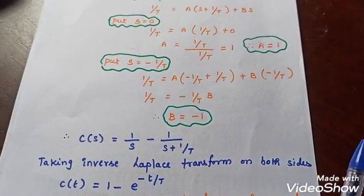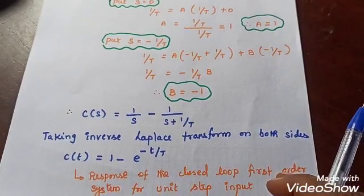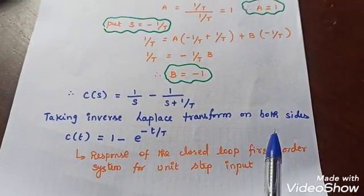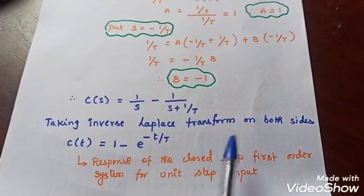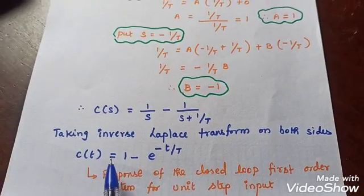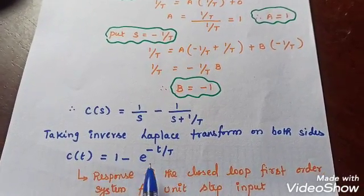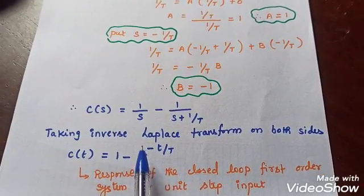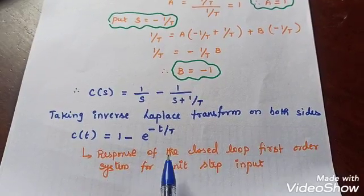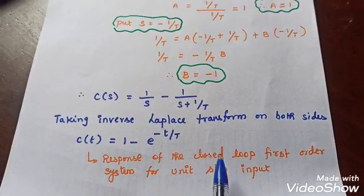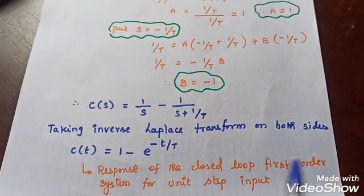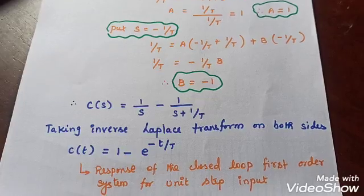Taking the inverse Laplace transform on both sides, we get C(t) = 1 − e^(−t/T). This is the response of the closed-loop first order system for the unit step input.